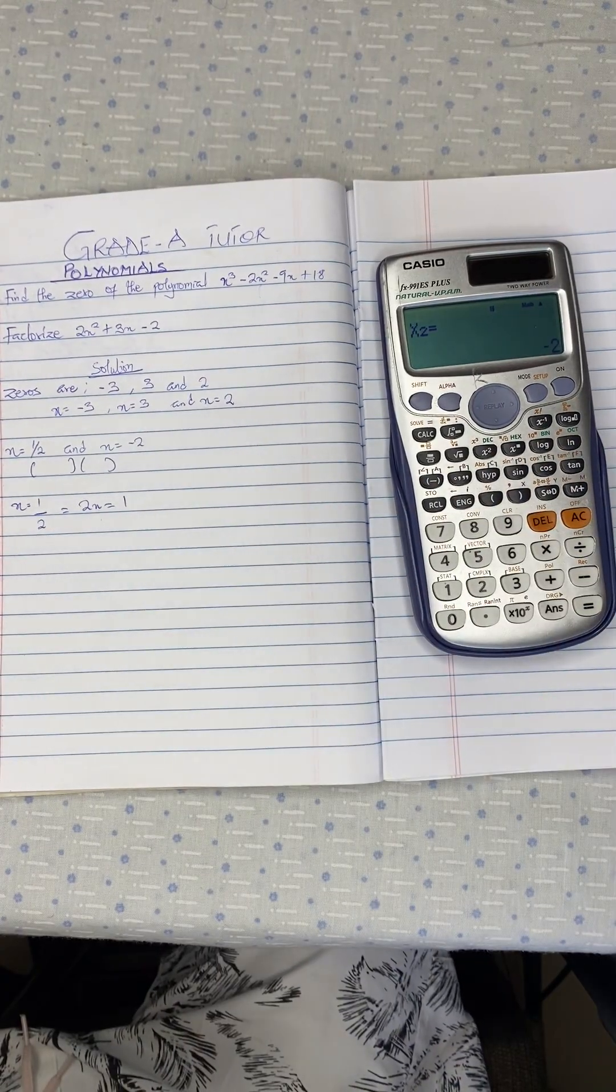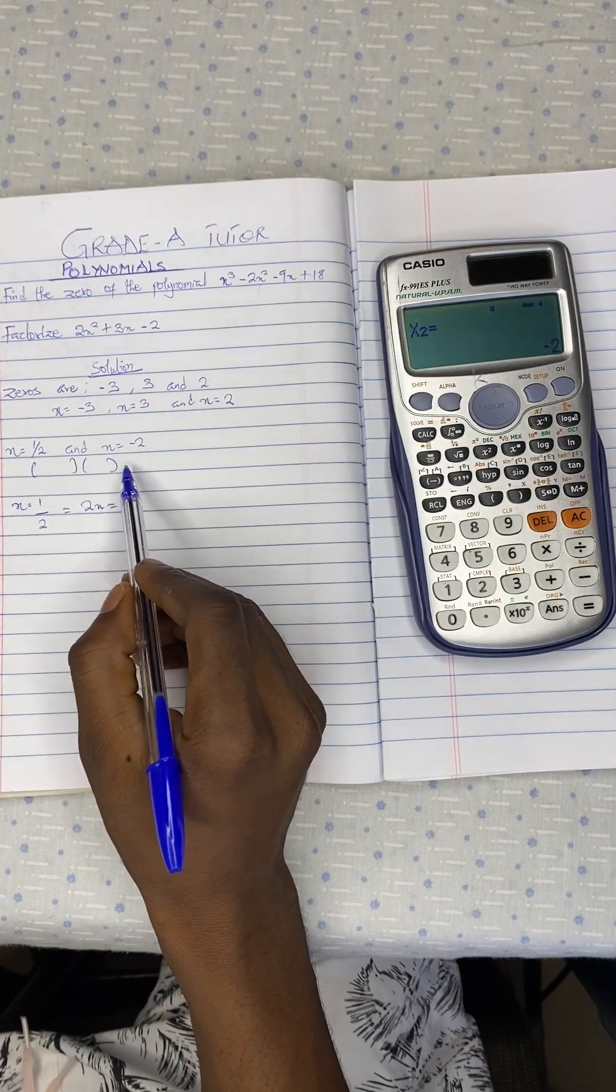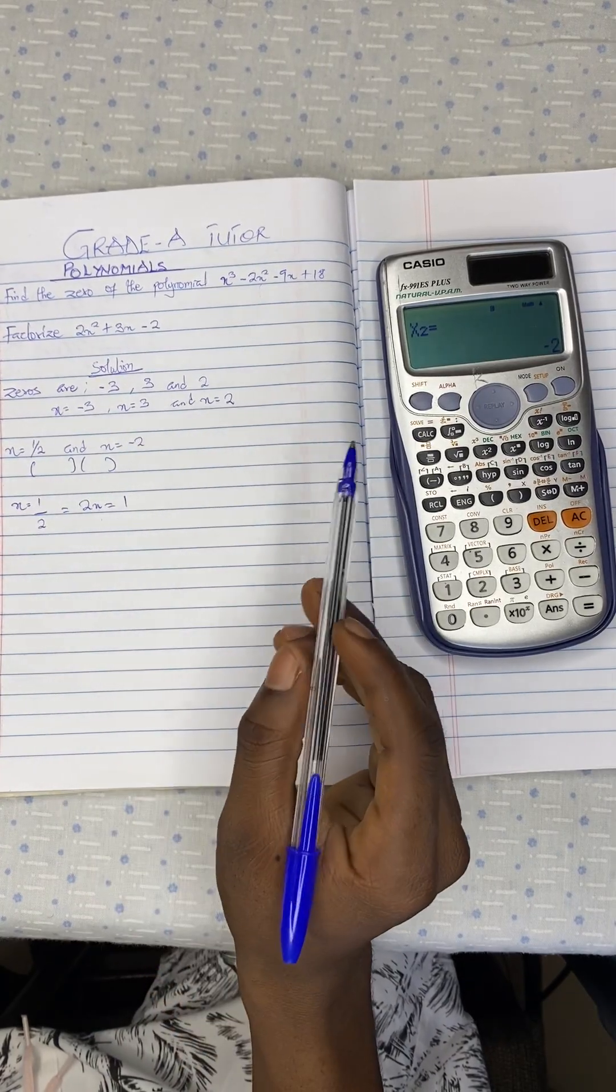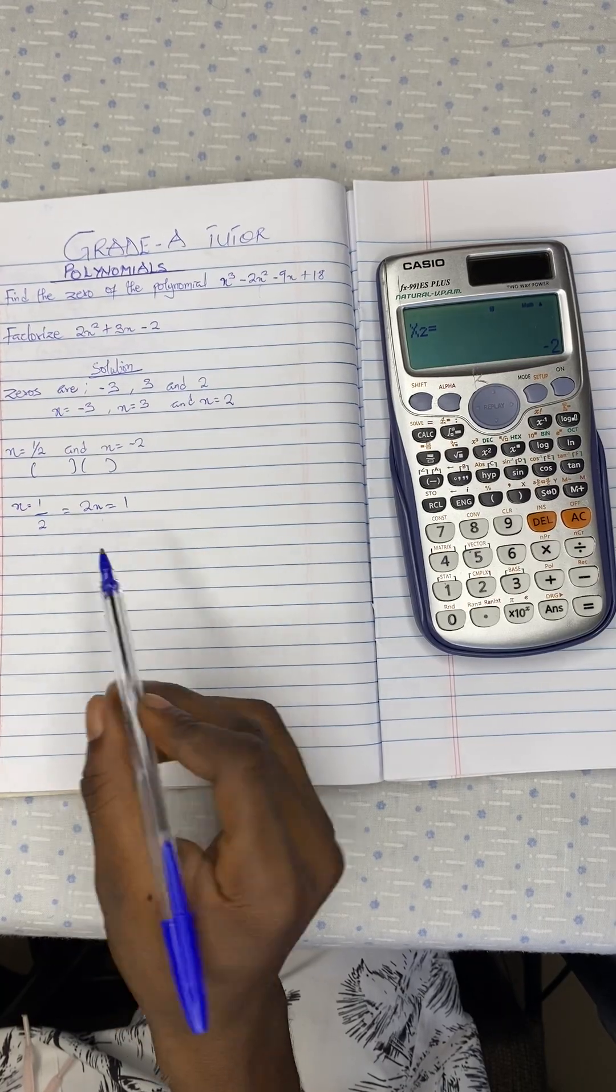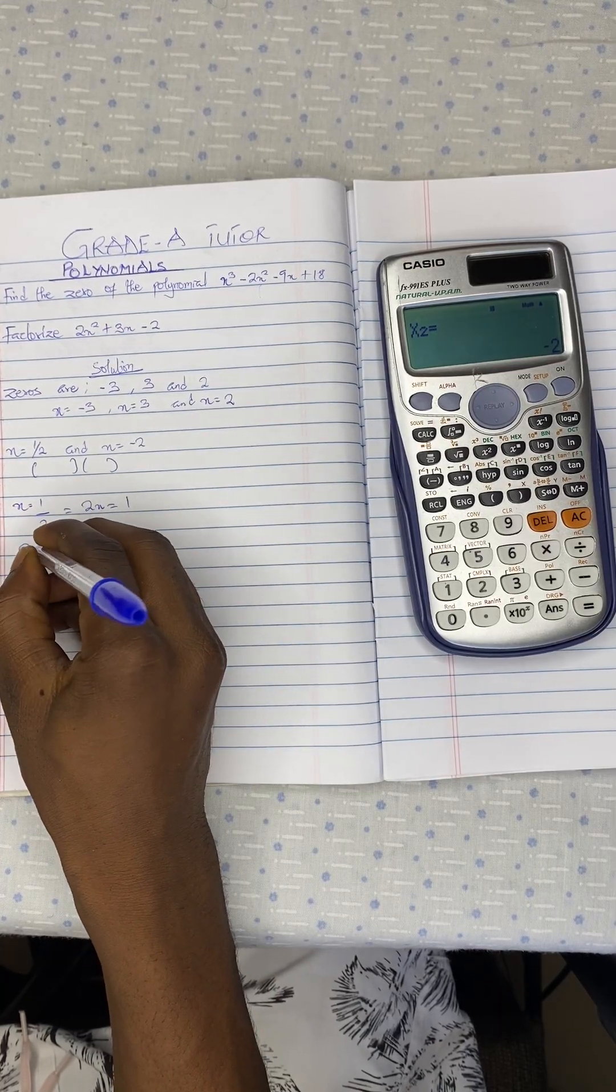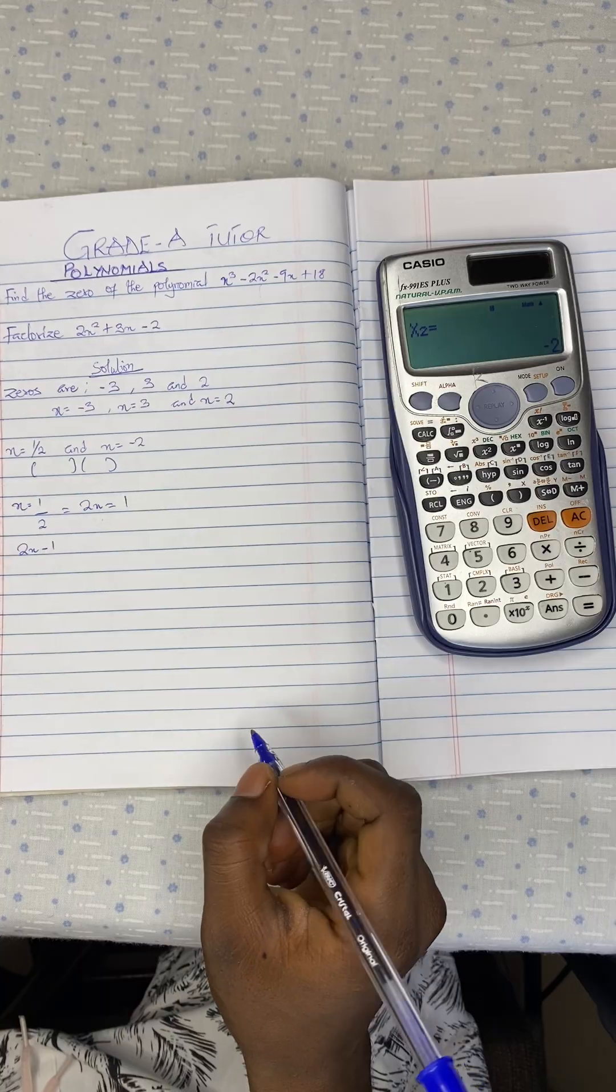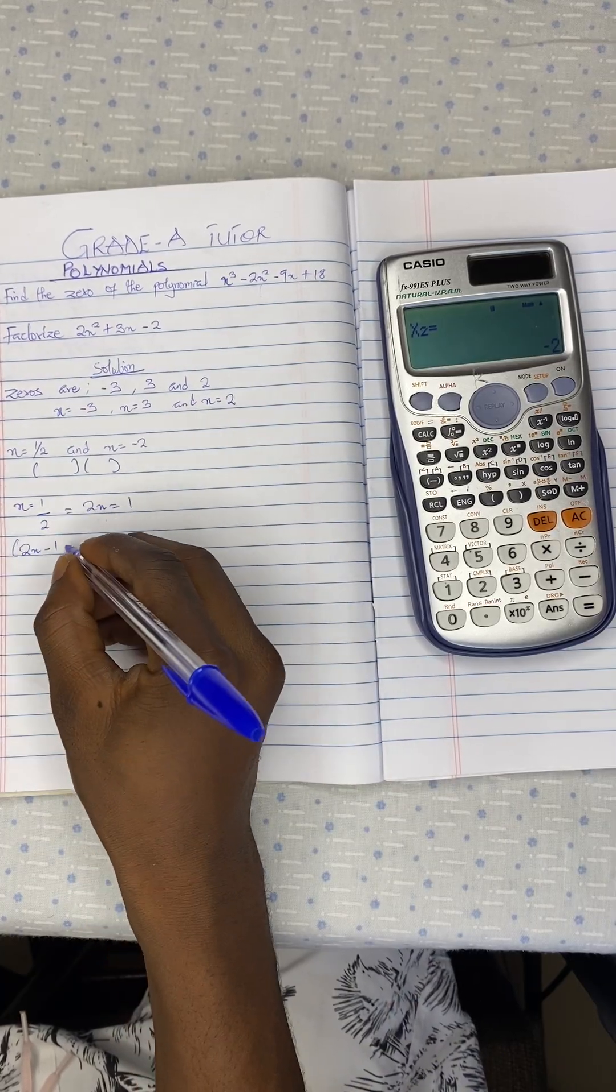Then you group like terms. We don't want 0, or we don't need any equal sign. So we bring the 1 to the left hand side to get 2x minus 1. So it is going to be in one bracket.